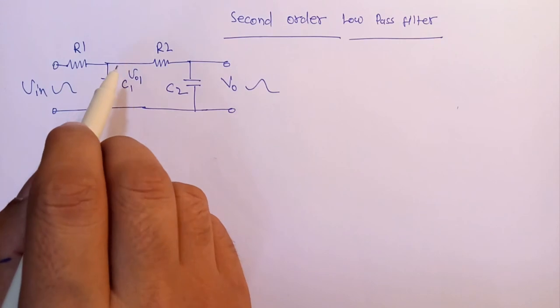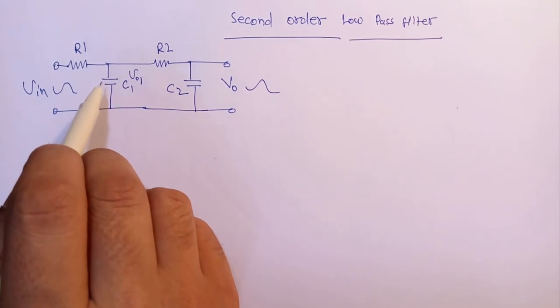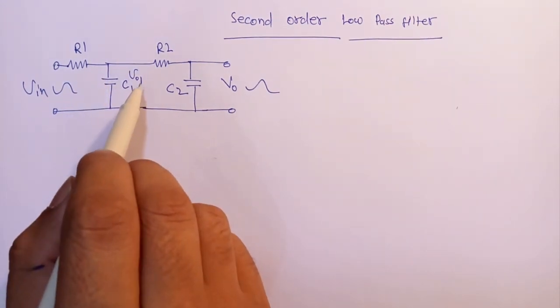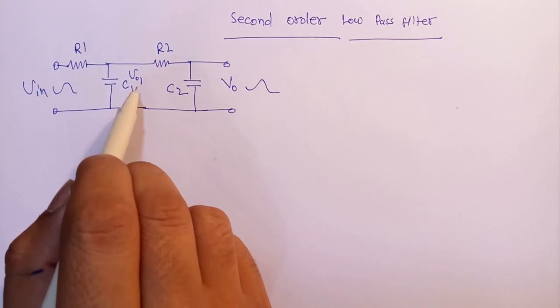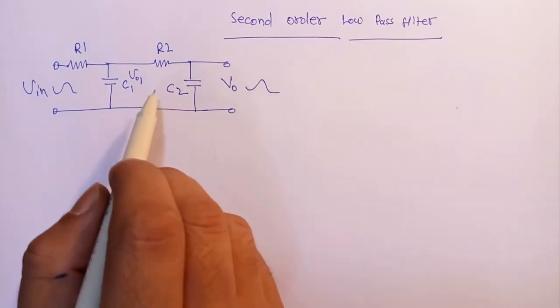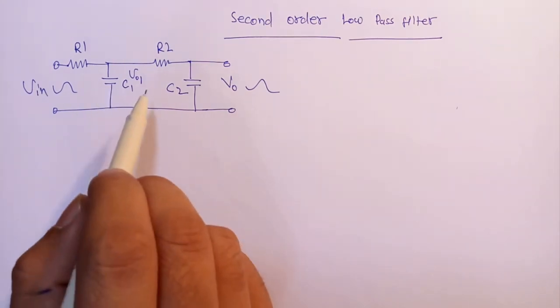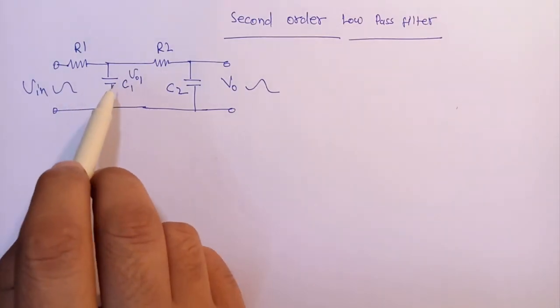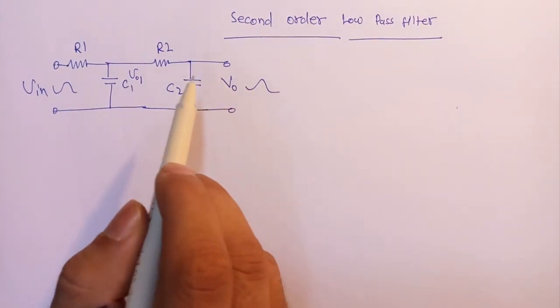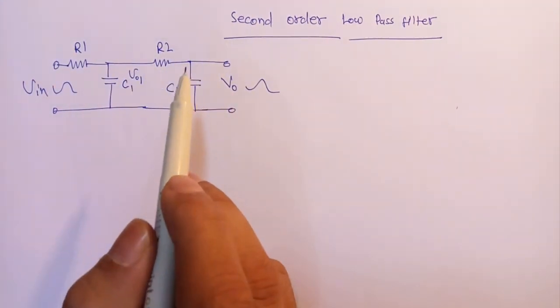This circuit uses two passive first order low pass filters connected or cascaded together to form a second order or two pole filter network. Therefore we can see that a first order low pass filter can be converted into a second order type by simply adding an additional RC network to it.